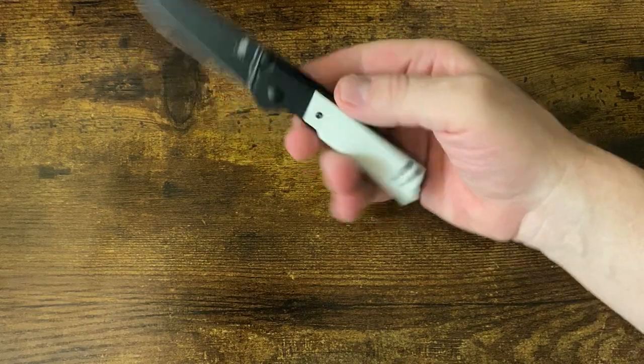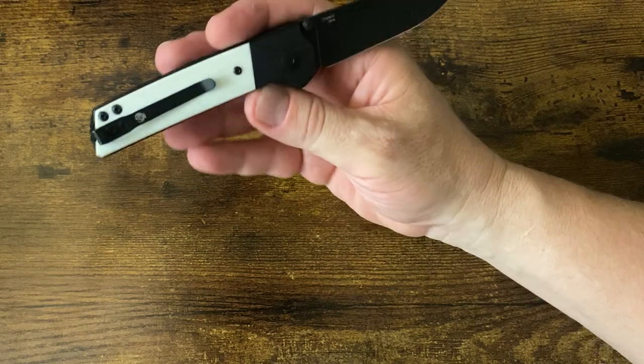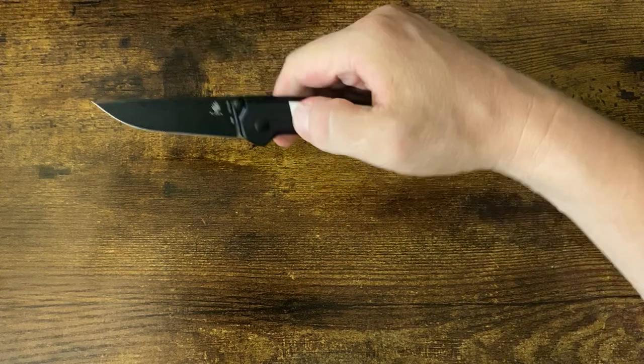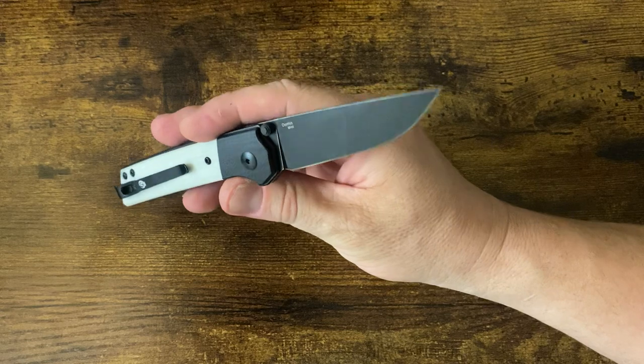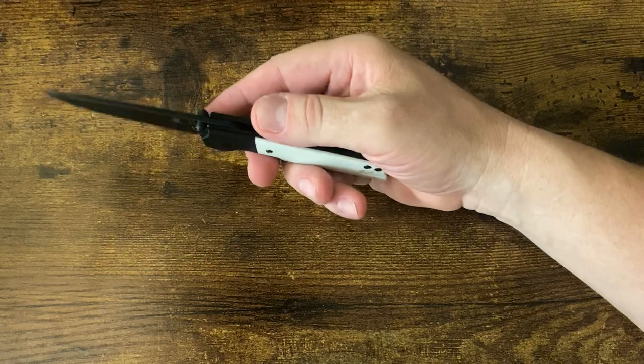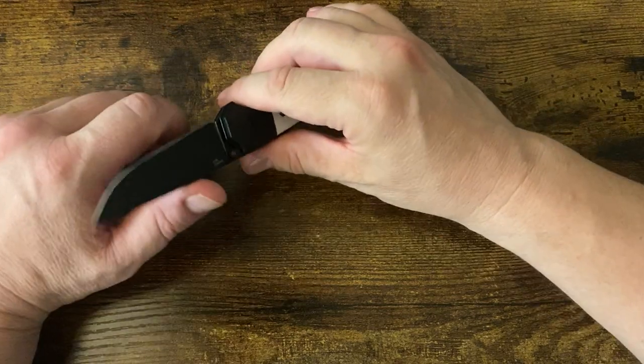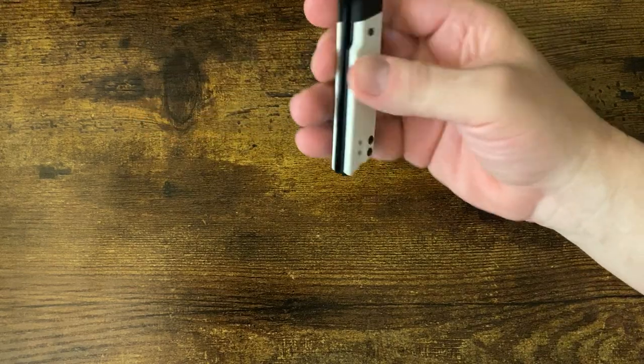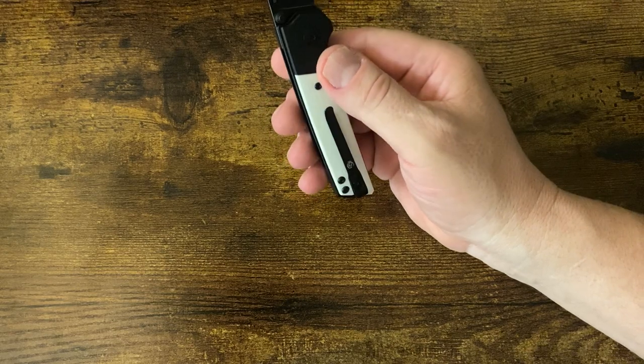Relatively thin blade stock. N690 is good. It's right up there, AUS-10, VG-10. The composition is somewhere in between there. I have no problem with it. It's a Bohler steel, which they're known for their cleanliness in their steel, so it usually seems to do pretty good. Kaiser has fantastic heat treats, so I have no complaints there.